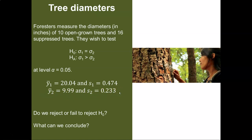What we're really comparing here is, is this value 0.474 about equal to 0.233? We're going to ask the question, do we reject or fail to reject the null hypothesis? And then really, what can we conclude about the variance between these two populations of tree diameters?